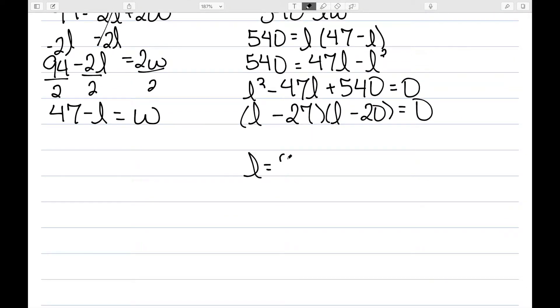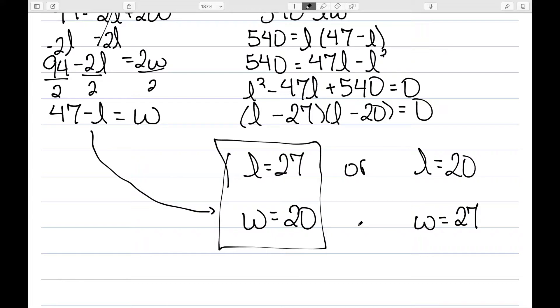So this tells me that l equals 27 or l equals 20. I have this nice equation here for the width, 47 minus the length. So 47 minus 27 would be 20. Here it would be 47 minus 20, which is 27. So either way, these answers are the same, a 27 by 20 foot garden.